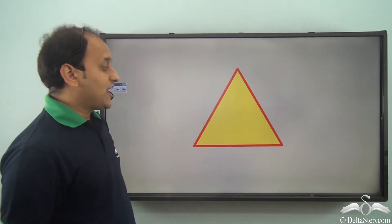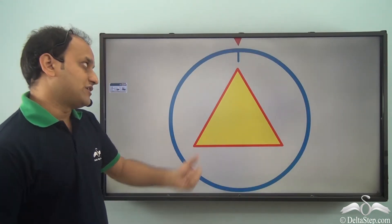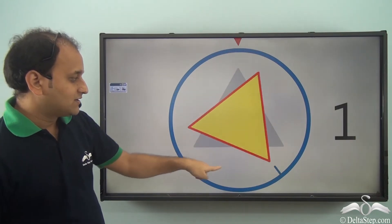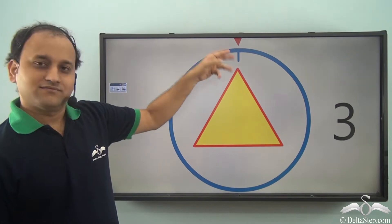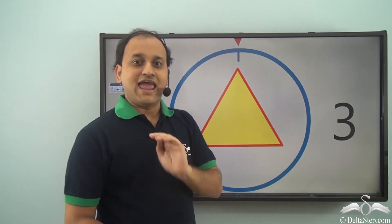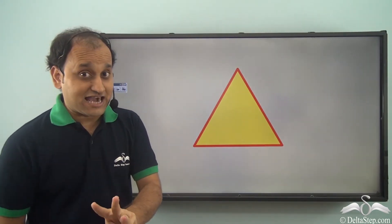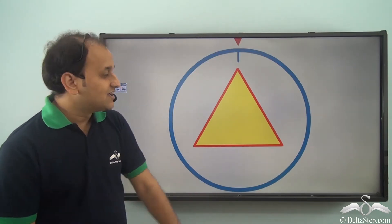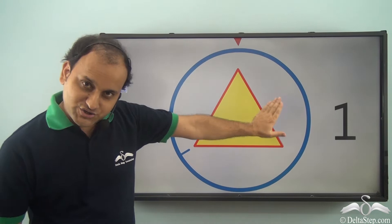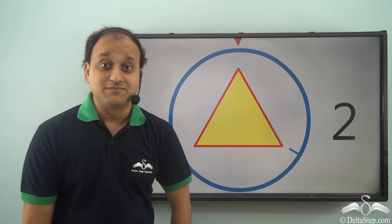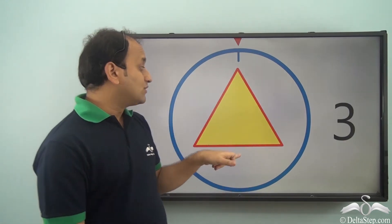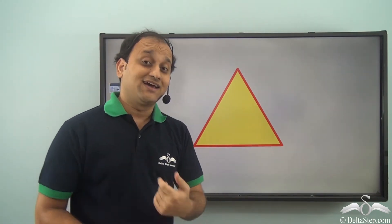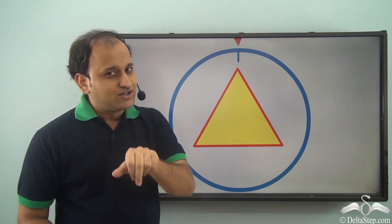Now what about this triangle? We rotate it: one, two, and three — the turn completes. We saw that three times it fits into itself. As a result, the order of rotational symmetry for this triangle is three. And notice that it has three equal sides and it is showing rotational symmetry of order three.